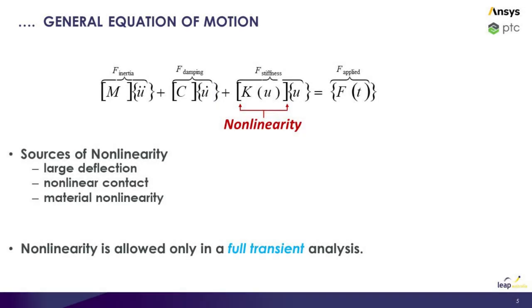Pictured here is the equation of motion for a transient analysis. Note that non-linearity can only be found by using a full transient analysis. The sources of non-linearity are large deflections in the model, non-linear contacts, and material non-linearity. Now let's look into the dynamic solving methods.